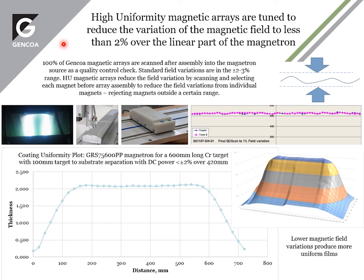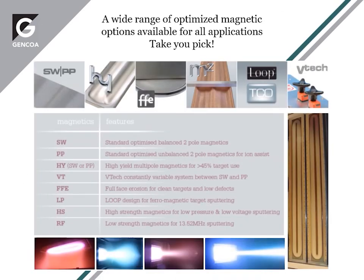High uniformity magnetrons involve more time and effort in tuning the magnetic array. Typically a magnetic array is scanned after being built into a body, with close control of tolerances on parts and magnets, achieving a field variation of between 2 and 3% over the target. For high uniformity magnetic arrays, we pre-select and check the energy product of each magnet before use, batch them, and use certain magnets for certain arrays to achieve much tighter variation in magnetic field along the target length. This corresponds to tighter uniformity — important for some applications — and also minimizes machine-to-machine variation.